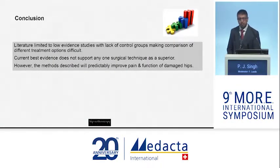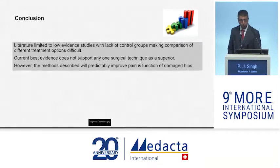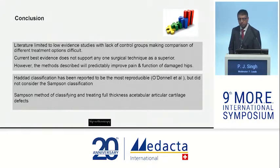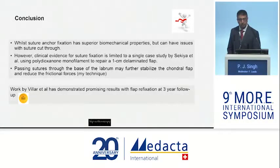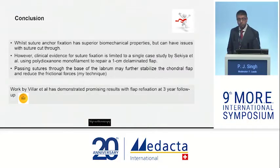In conclusion, the literature is limited to low-level evidence with no control groups comparing different treatment options. Current best evidence does not support one treatment over another. However, the methods described do show predictable improvement in pain, function, and modified Harris Hip scores. The Haddad classification has the best inter-observer reliability, though Sampson's classification is also recommended. While suture anchor repair has been shown to be the most biomechanically sound, the clinical evidence is based on only one case report. The work by Villa et al. remains the most reproducible and reliable to date. Thank you.